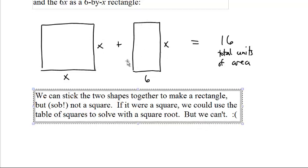We could stick these two together and make a rectangle, but not a square. If it was a square, you would have a square equaling 16. You take the square root of both sides. They could use their square root table, but we can't.